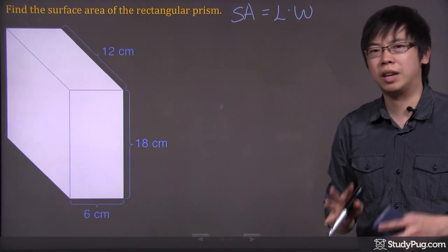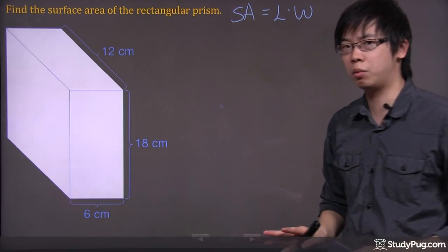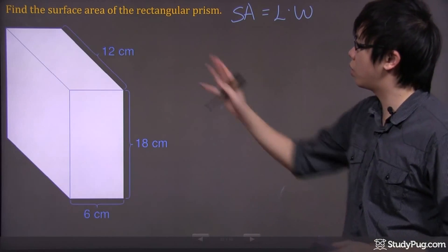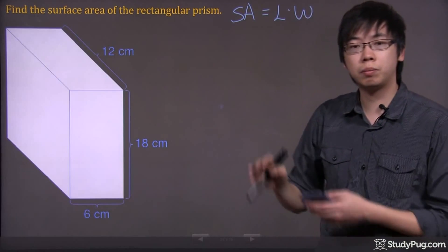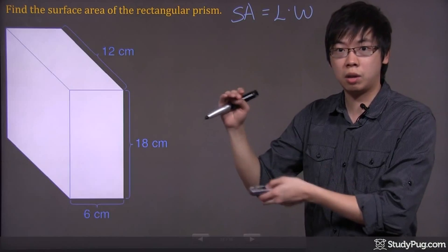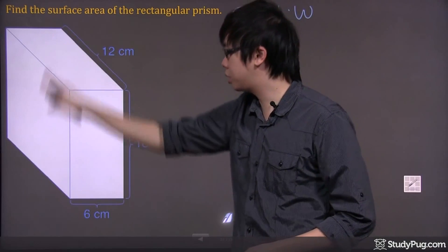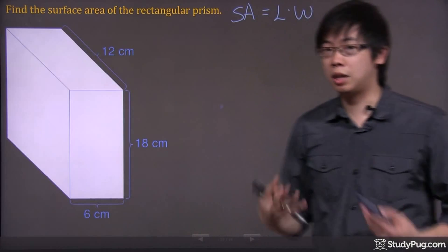There are six different sides. We need to calculate all of them, so this is going to take a bit of work. Let's do one at a time. Since it's a rectangular prism, usually there will be two sides that are the same size. For example, the top piece and the bottom piece will be identical.